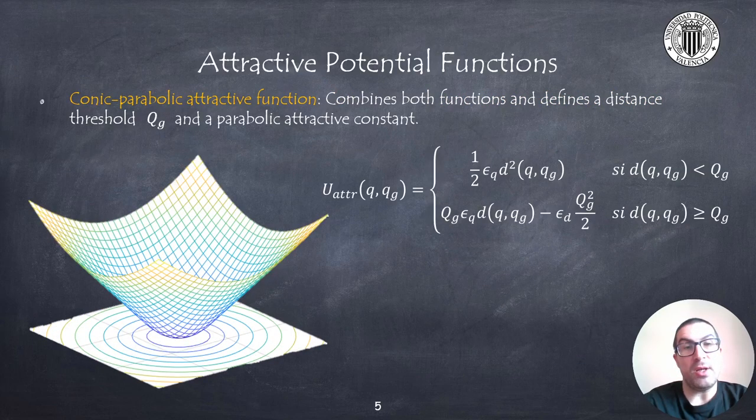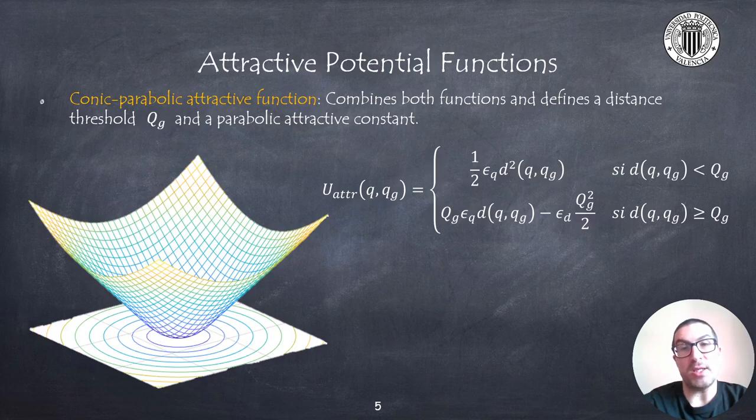The conical parabolic function combines the two previous ideas, so inside it behaves parabolically—that is, it depends quadratically with the distance—while outside it behaves conically, depending linearly with the distance.